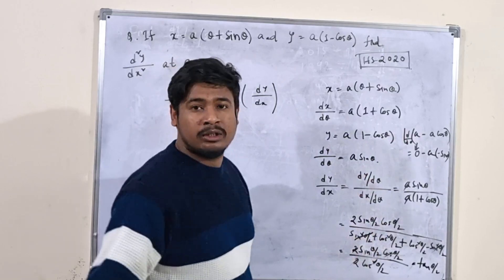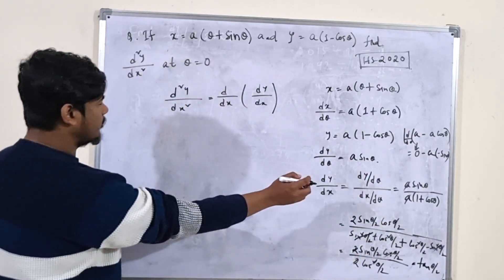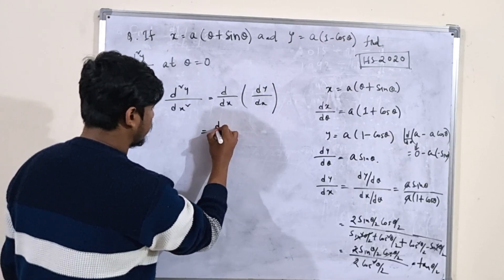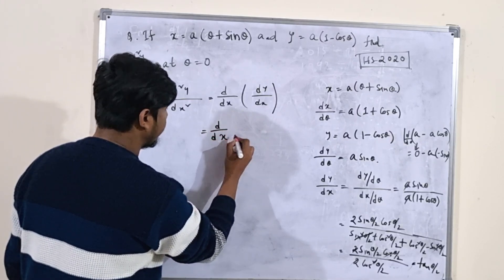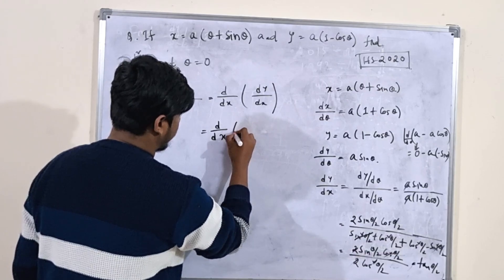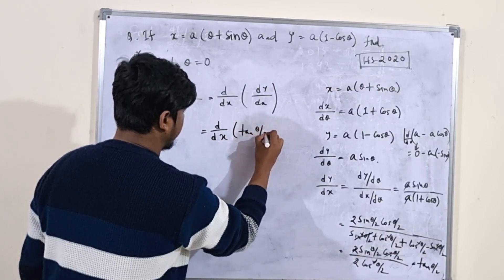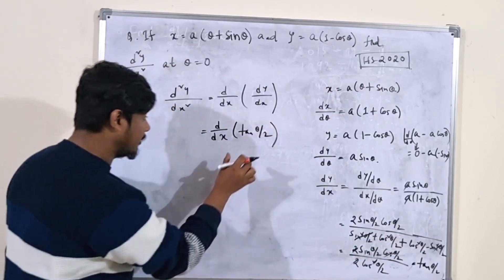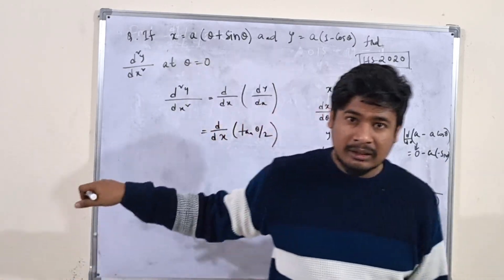Now to find d²y/dx², we differentiate dy/dx = tan(θ/2) with respect to x. We write this as d/dx[tan(θ/2)], which equals d/dθ[tan(θ/2)] multiplied by dθ/dx.